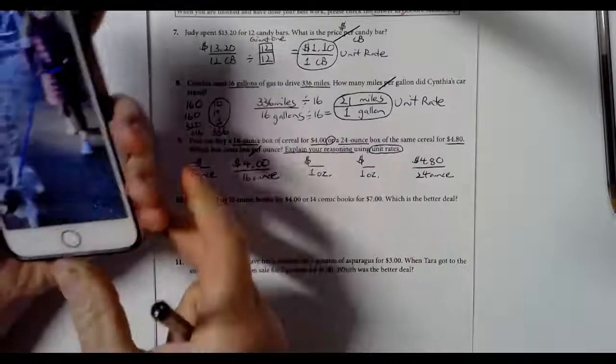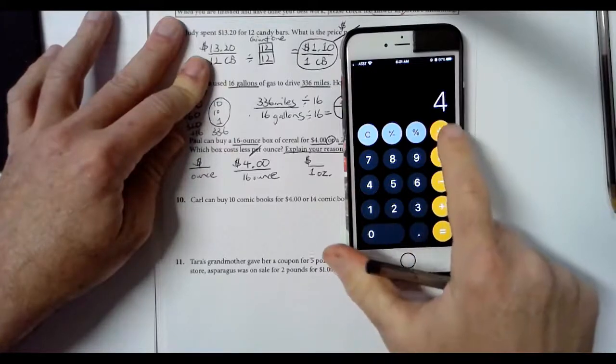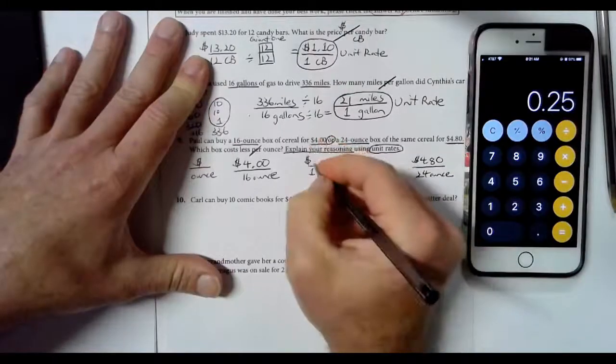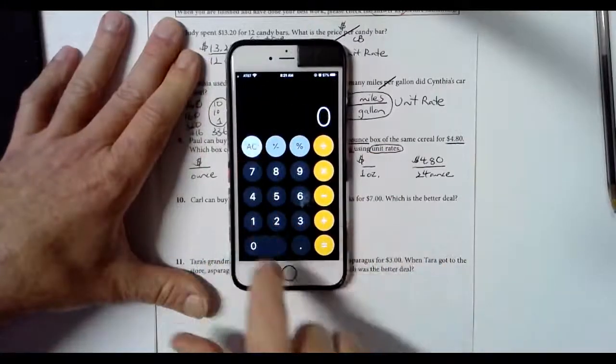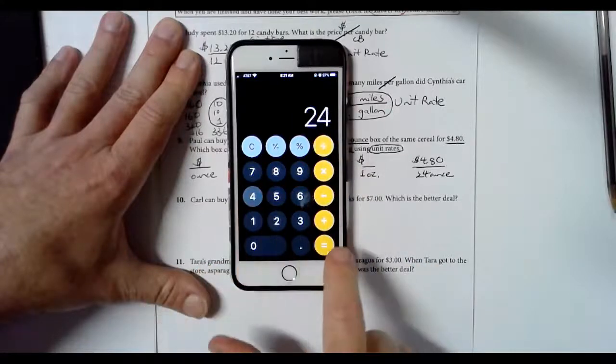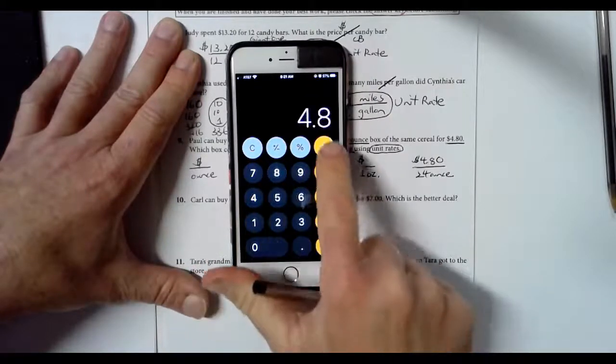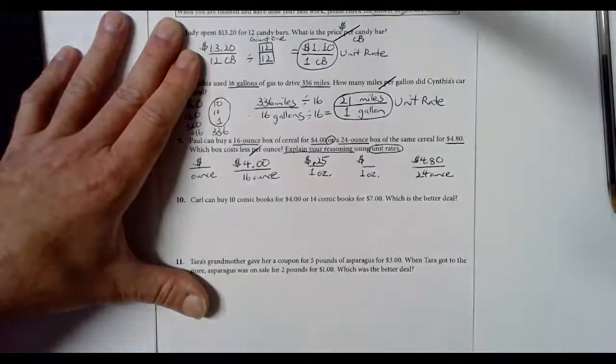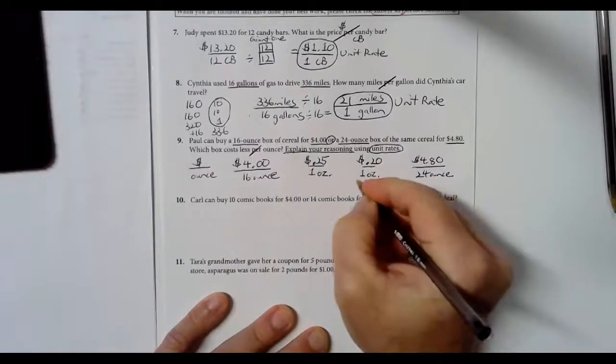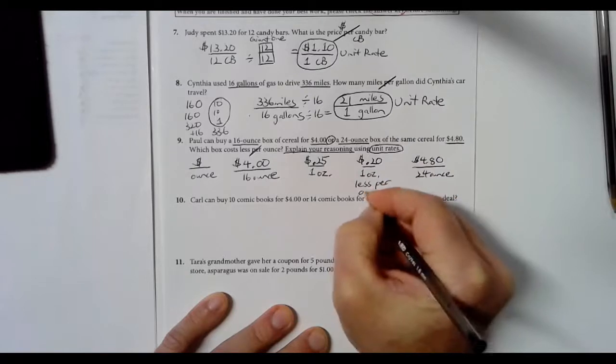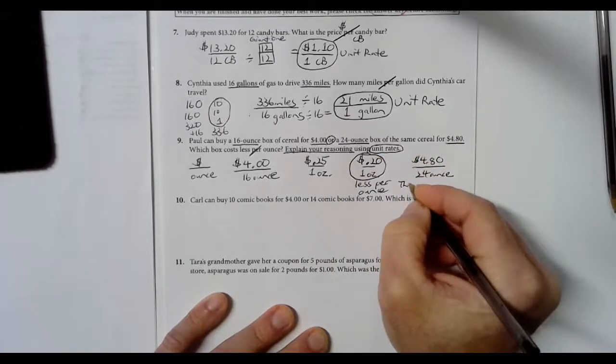$4 for 16 ounces. I'm going to use a calculator. $4 divided by 16 ounces means 25 cents, twenty-five hundredths of a dollar per ounce. And then I will take the $4.80 divided by 24 ounces. That's 20 cents, twenty-one hundredths of dollars. So that's cheaper, so that means less per ounce.